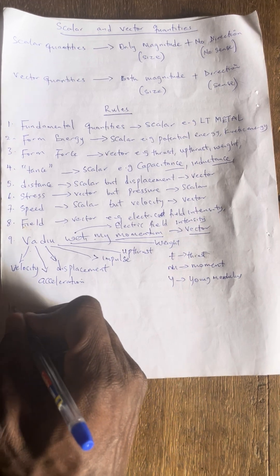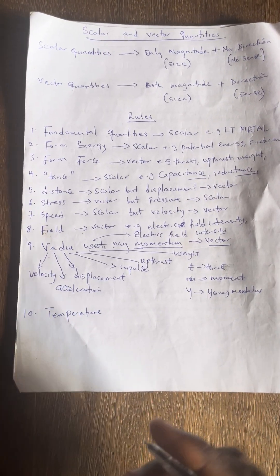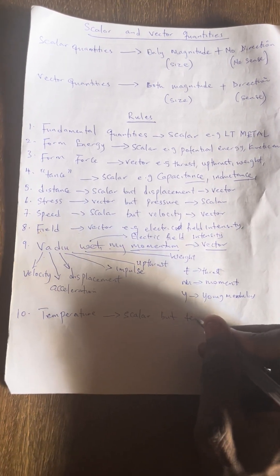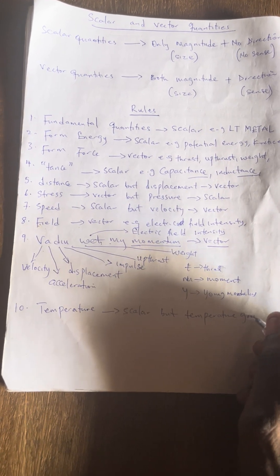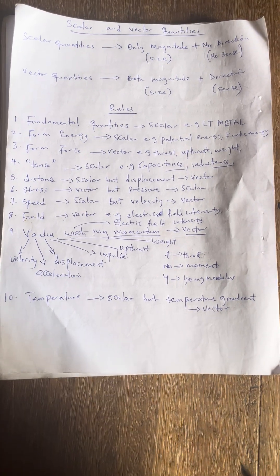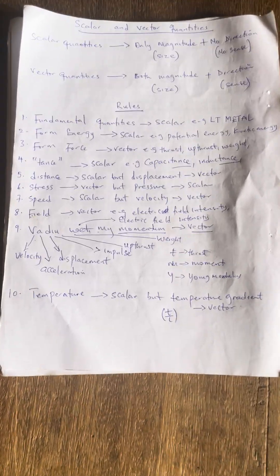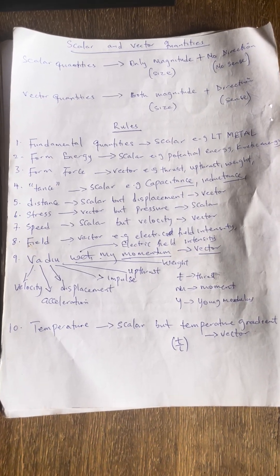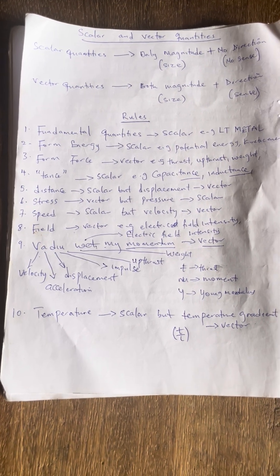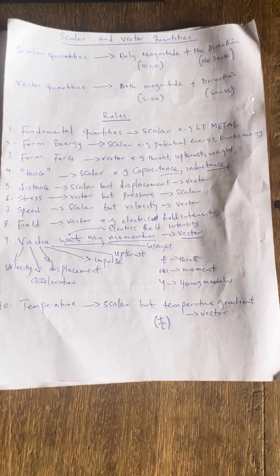Rule number ten: temperature is a scalar quantity according to rule one. But temperature gradient is a vector quantity. 'Gradient' means 'over land' — i.e., with respect to distance. So temperature on its own is scalar, but temperature gradient adds direction, making it a vector.